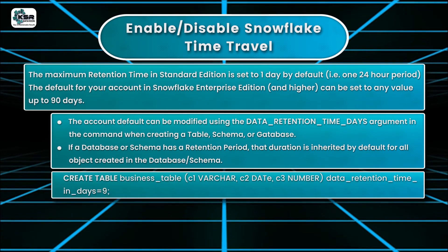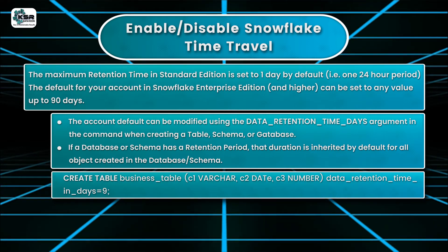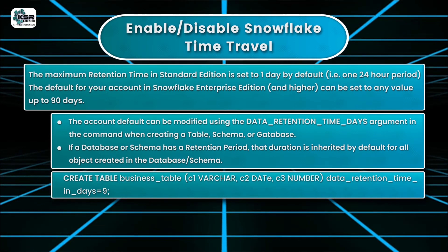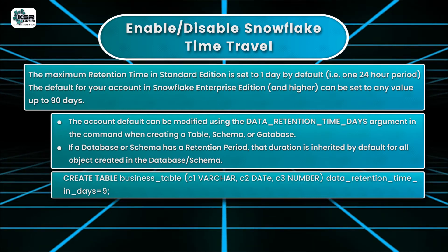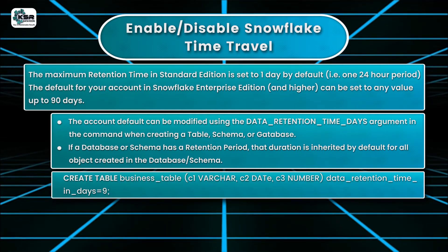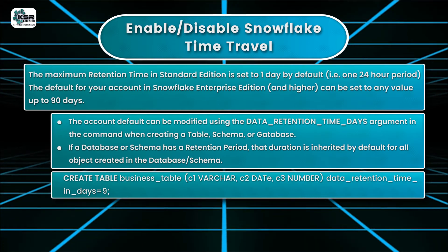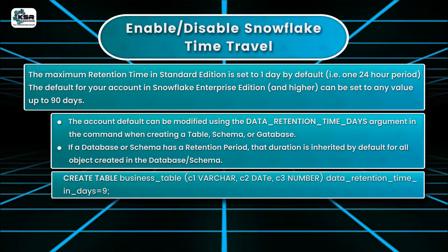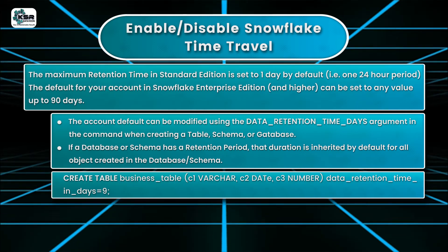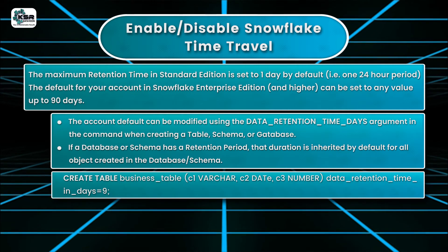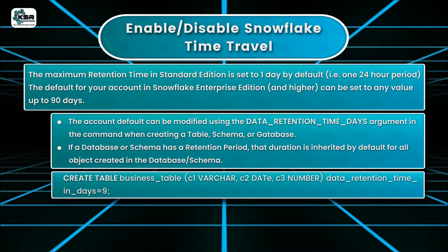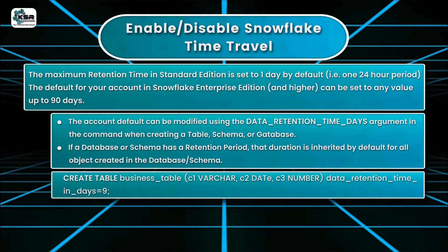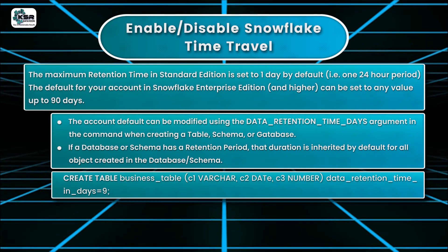For example, using CREATE TABLE with data_retention_time_in_days equals nine days. If no keyword like TEMPORARY or TRANSIENT is specified, it automatically becomes a permanent table. Note: time travel cannot be turned off at the account level, but it can be turned off for individual databases, schemas, and tables by setting data_retention_time_in_days to zero. This hierarchy prevents accidental account-level changes from wiping time travel across all objects.